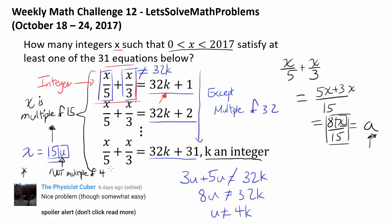And we now have all the information to find x. You know x has to be a multiple of 15, we already established that. So x is a multiple of 15, but x is a multiple of u, and since u is not a multiple of 4, and 15 is not a multiple of 4, x cannot be a multiple of 4.